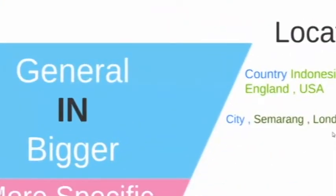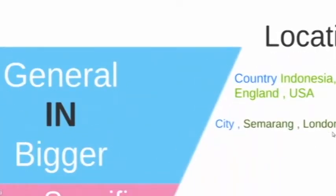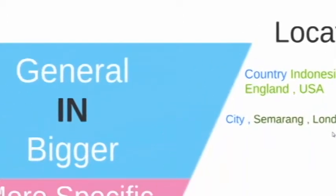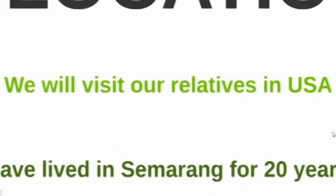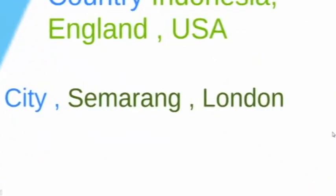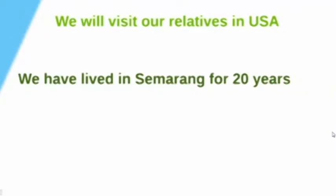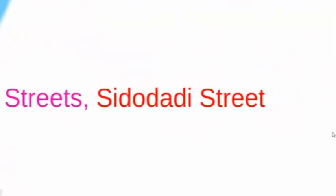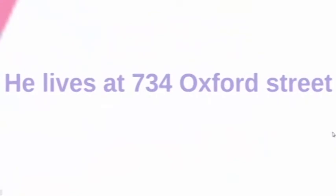Now, we will move to the preposition to show place. In is used for showing the country — for example, we will visit our relatives in USA. City — for example, we have lived in Semarang for 20 years. On is used for streets — for example, our school is located on Sidodady Street. At is used for an address — for example, he lives at 734 Oxford Street.